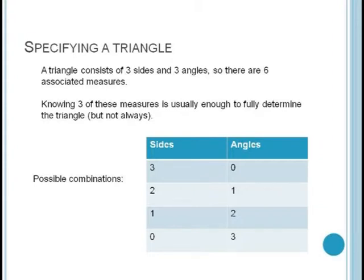If we're choosing three parts from our triangle, we have four possible cases to consider. We might have three sides, two sides and one angle, one side and two angles, or three angles.